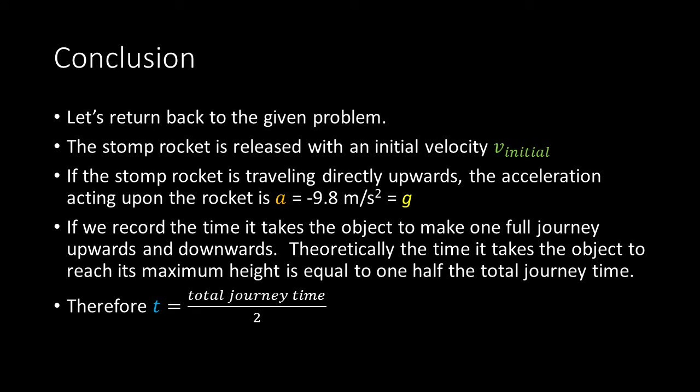If we record the time it takes the object to make one full journey upwards and downwards, theoretically, the time it takes the object to reach its maximum height is equal to one-half the total journey time. Therefore, t is equal to the total journey time divided by 2.